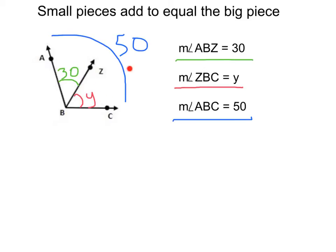We can just set up like we did before. The small pieces add to the big piece. That would give us 30 plus y equal to the big piece, 50. From there, we can solve for our variable.